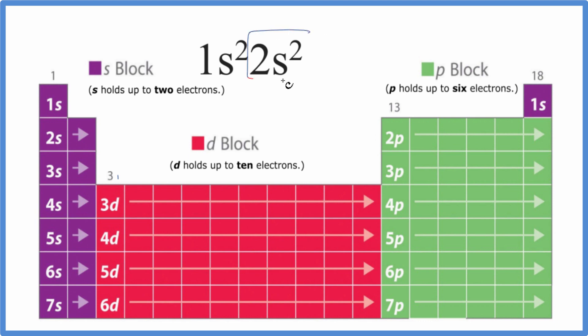We're looking for the element that ends in 2s2. So we go down to the second period or row. Here's 2s1, and this element right here, 2s2. This will have the electron configuration 1s2, 2s2.